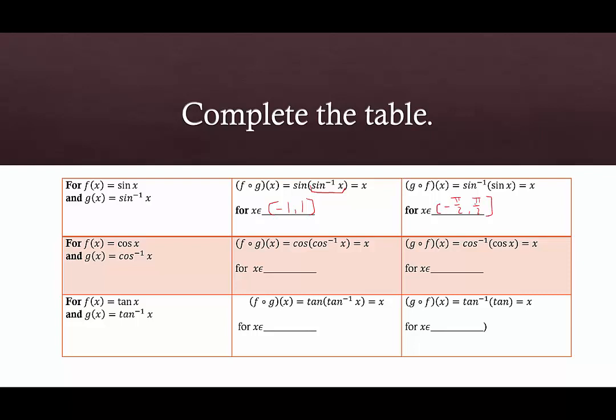For cosine, the domain for arccosine or cosine inverse is defined between negative 1 and 1. And the domain for the reverse composite function of that — the range of cosine inverse — is from 0 to pi. So a little bit different than our sine. The domains are the same, but the ranges are different.